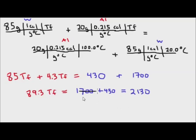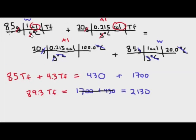So 89.3 Tf equals 2,130. Now let's consider the units. Grams cancels with grams on the left side, leaving calories per degree Celsius. On the right side, grams cancels with grams and degree Celsius cancels with degree Celsius, leaving calories. So both sides have consistent units — calories on the right and calories per degree Celsius on the left — which will work out correctly when we solve for Tf in degree Celsius.